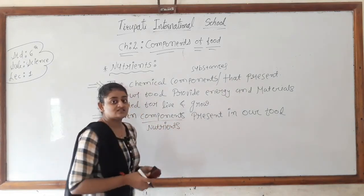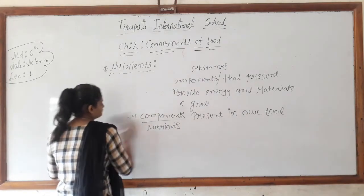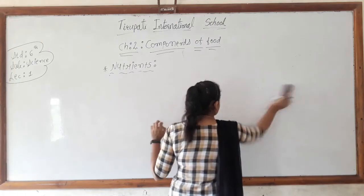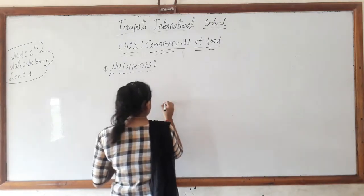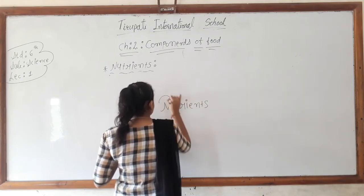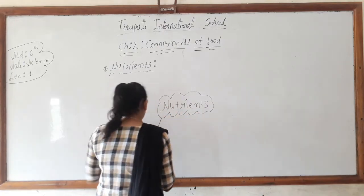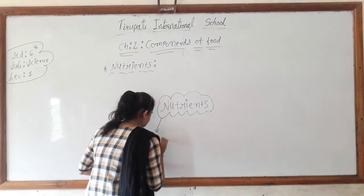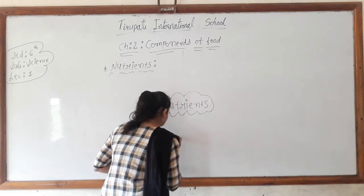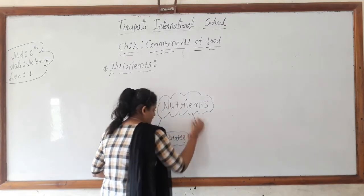There are basically seven types of components present in our food, and these components are also known as nutrients. We are now going to discuss what these seven types of components or nutrients are.